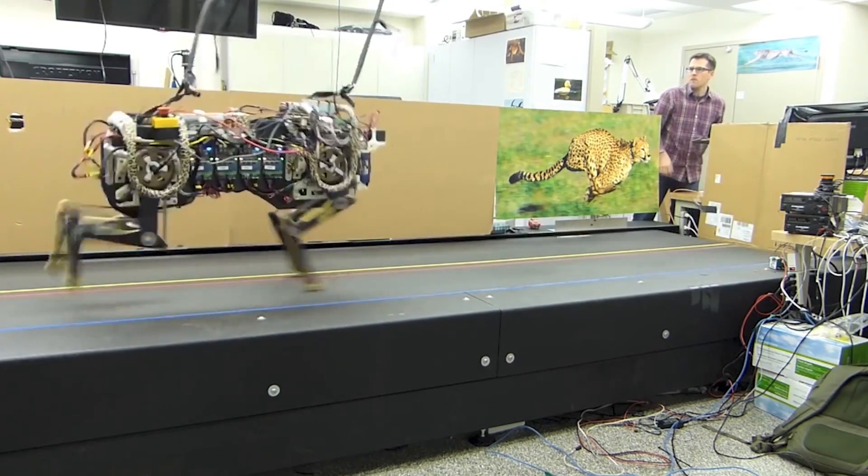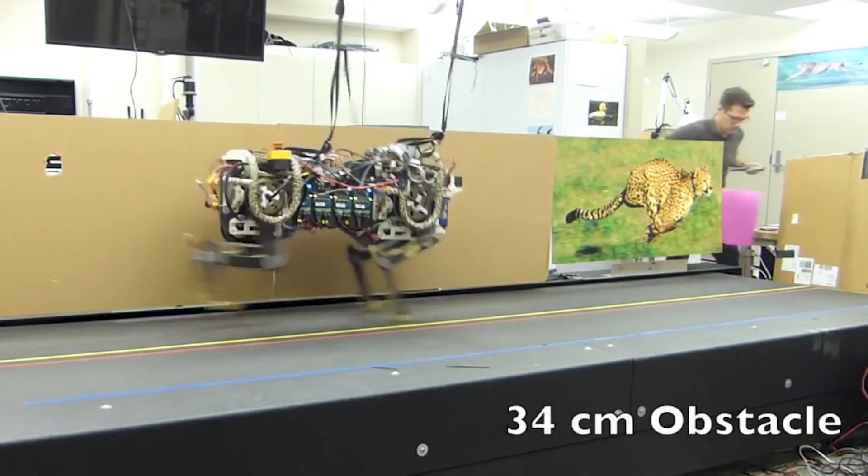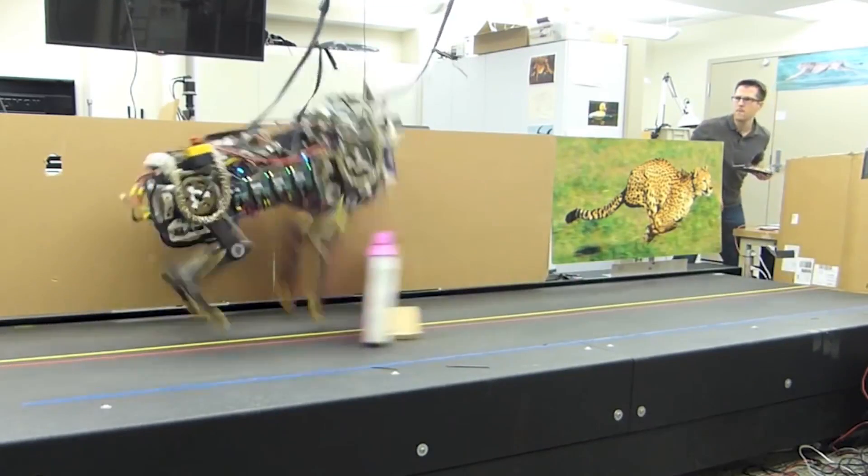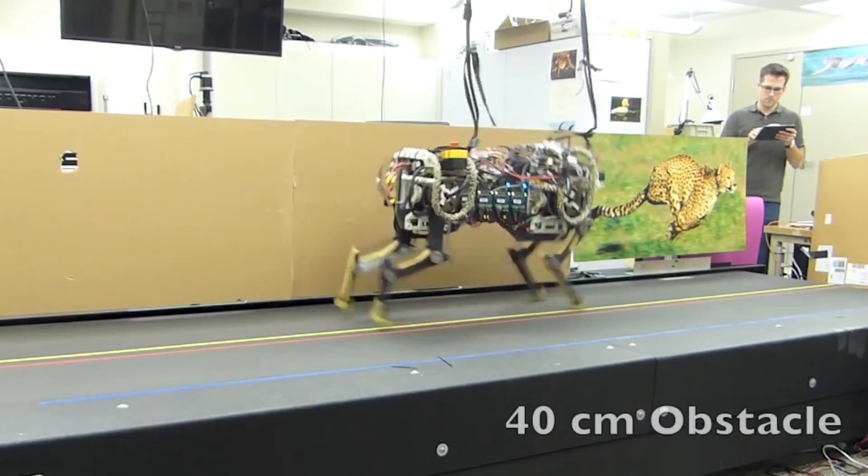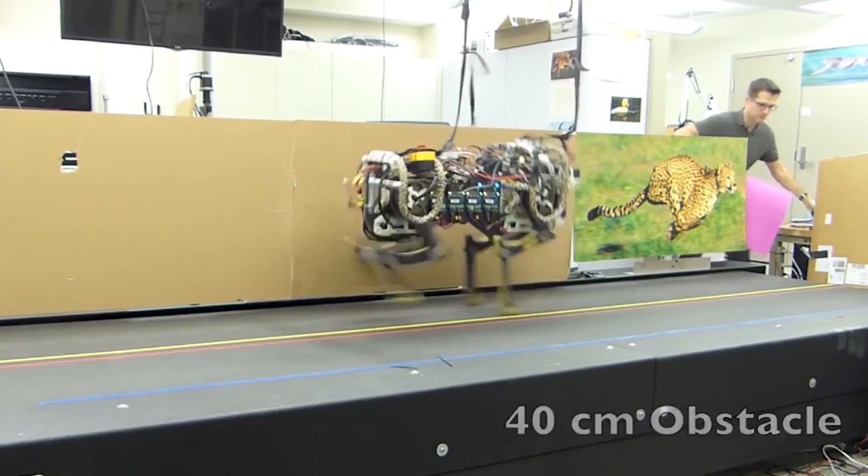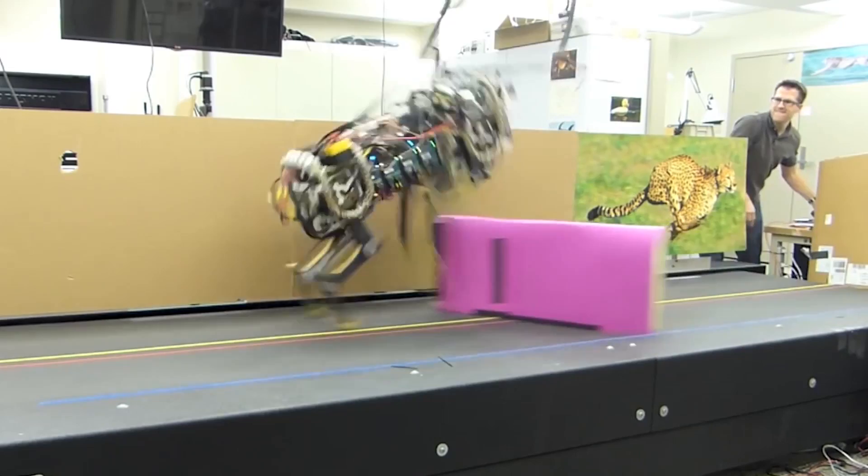Cheetah and the controller use battery power. With batteries fully charged, at top speed, the Cheetah runs at 29.2 miles per hour, 47 kilometers per hour, and jumps over obstacles 16 inches tall.